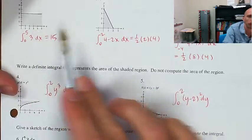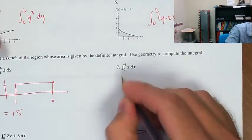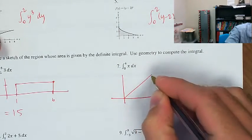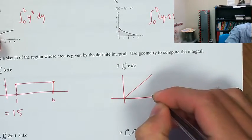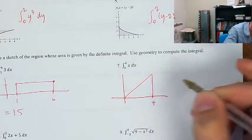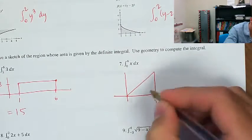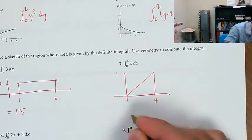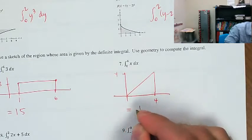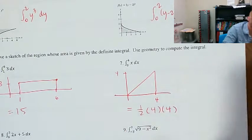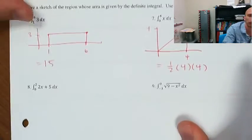This is very similar to that one, just moved over by 1. The integral from 0 to 4 of x dx — we know what the graph of y = x looks like. That's going to reach height 4 also, so that's going to equal one-half times the base times the height.